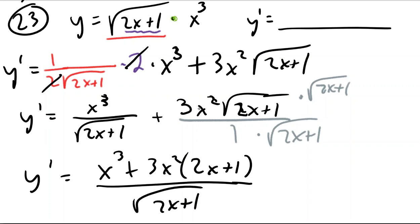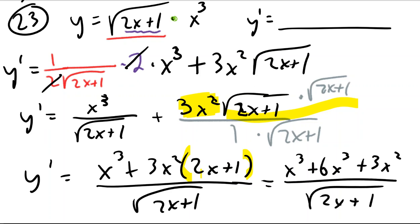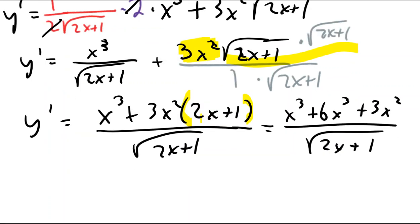Now similar to the previous question a minute ago, this is 3x² times all of this. So I would recommend you put it in parentheses before you forget. Don't just multiply the 3x² by 2x, it also goes to the one.